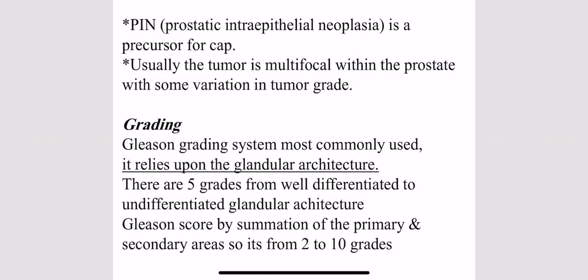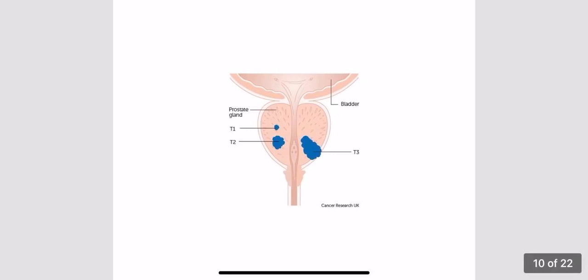The Gleason grade is a summation of the most dominant area and the second most dominant area. For example, if the most dominant is grade three and the second most dominant is grade two, the Gleason score is five. If only one grade is found uniformly, the score is that grade added twice — e.g., two plus two equals four. The Gleason score ranges from two to ten: below six is mild, seven is moderate, and eight to ten is severe.